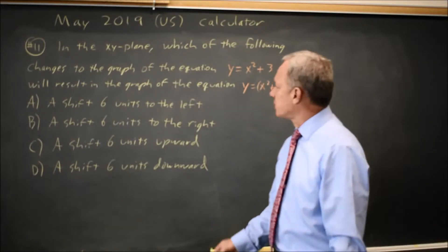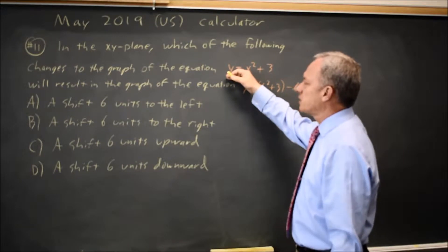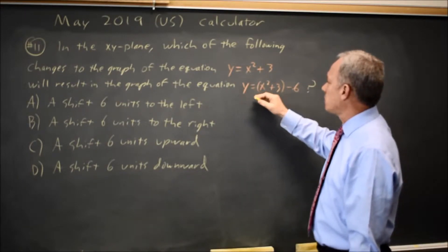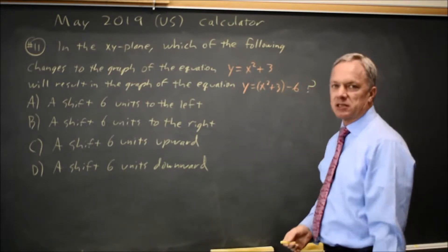This is calculator question number 11. College Board gives us the equation Y equals X squared plus 3, and they ask what translation results in Y equals the quantity X squared plus 3, that quantity minus 6.